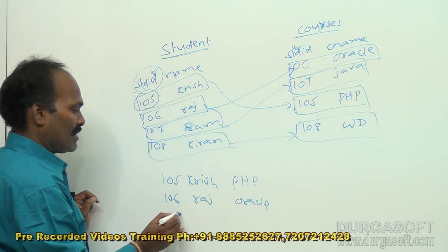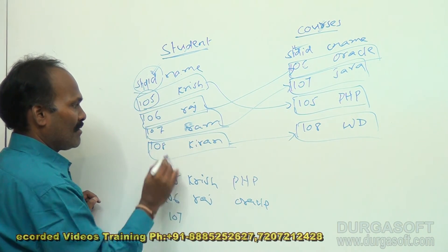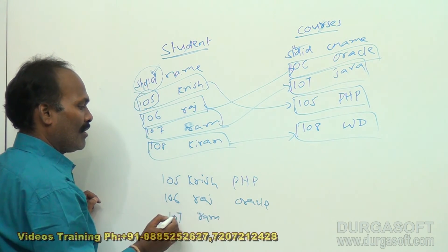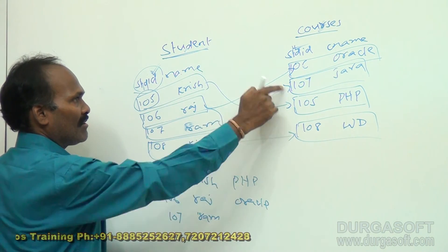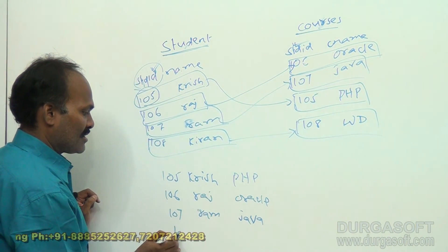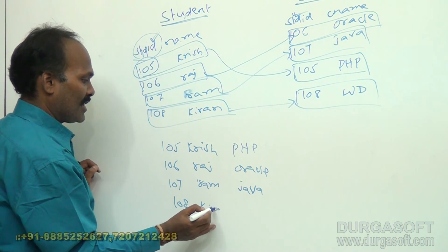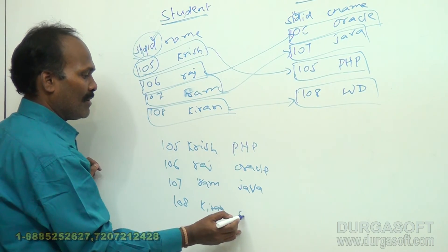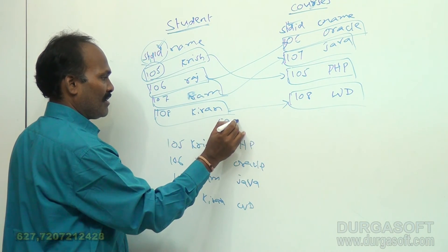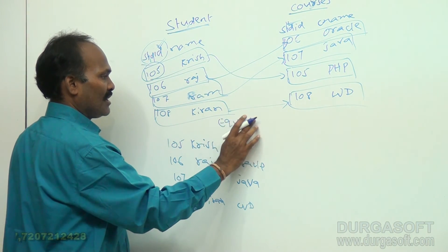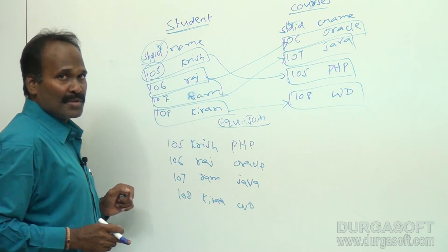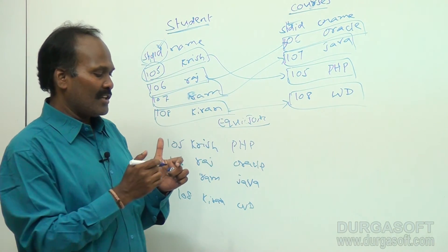For 107, the corresponding record in the courses table shows that student Ram or ROM has joined Java. For 108, the corresponding record in the courses table is web designing. We have to give a JOIN condition to join two tables in the equi-JOIN method.